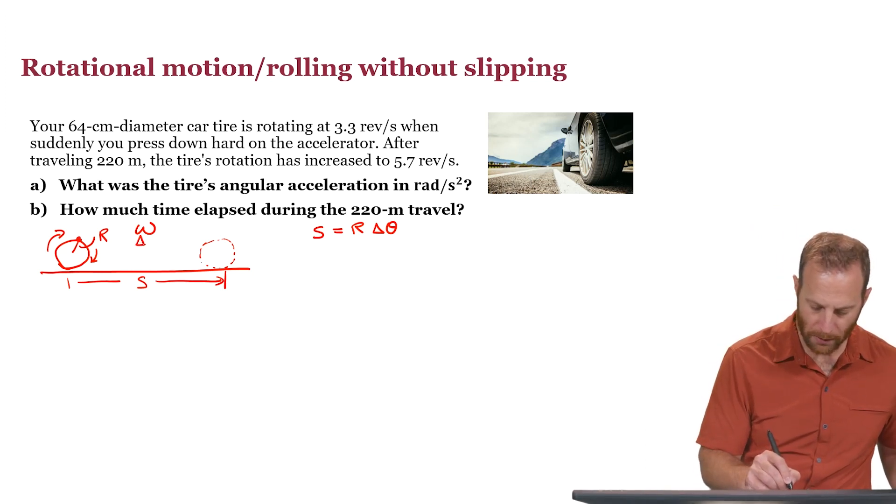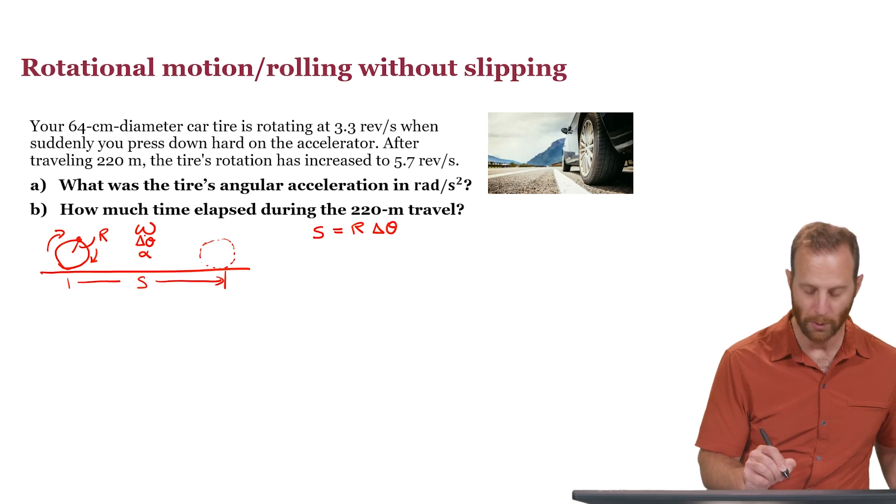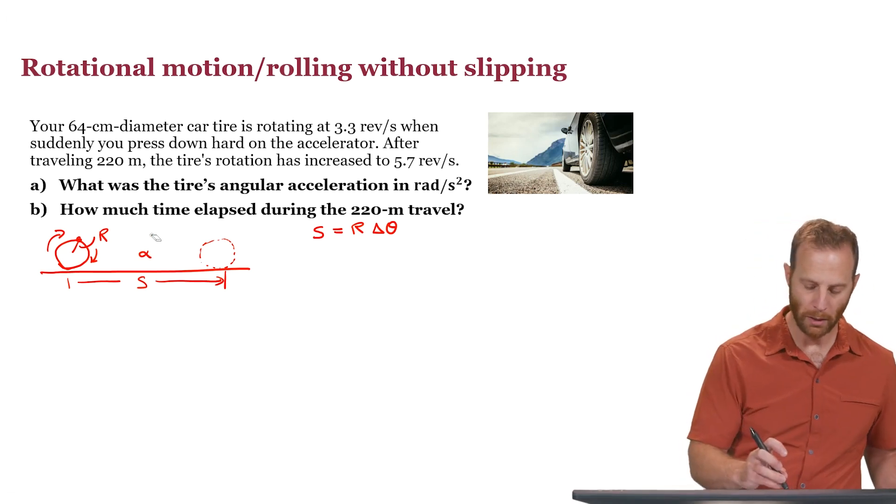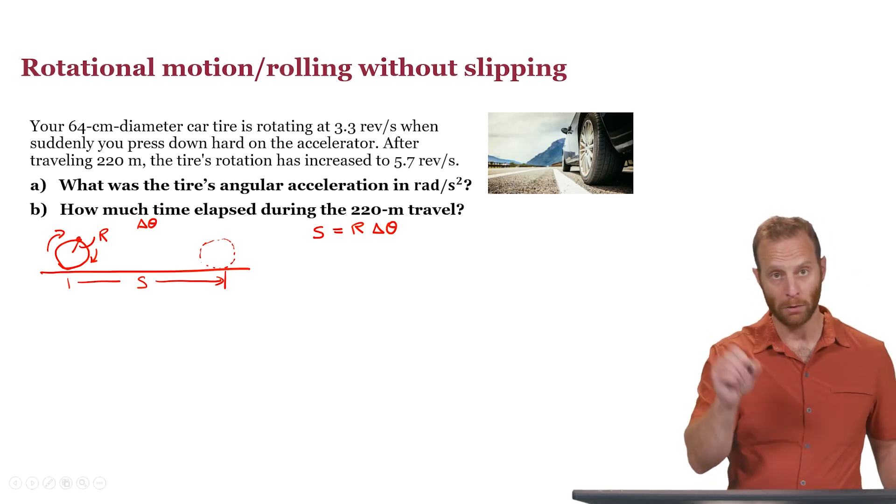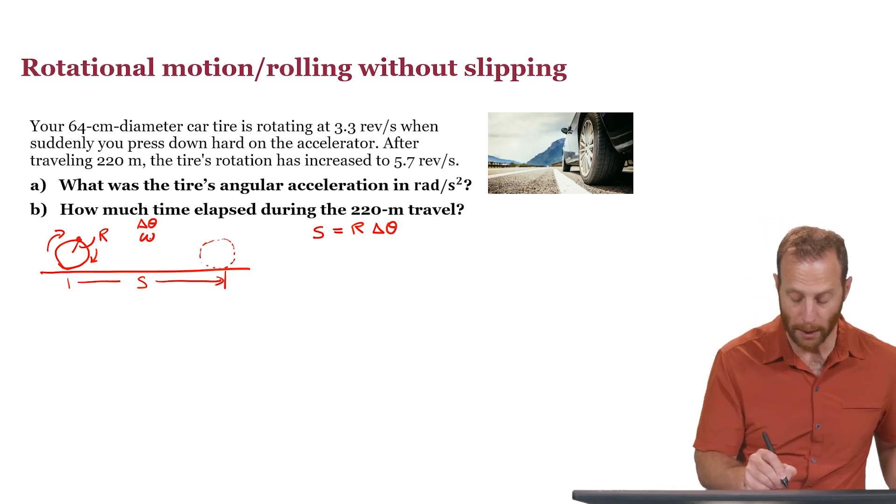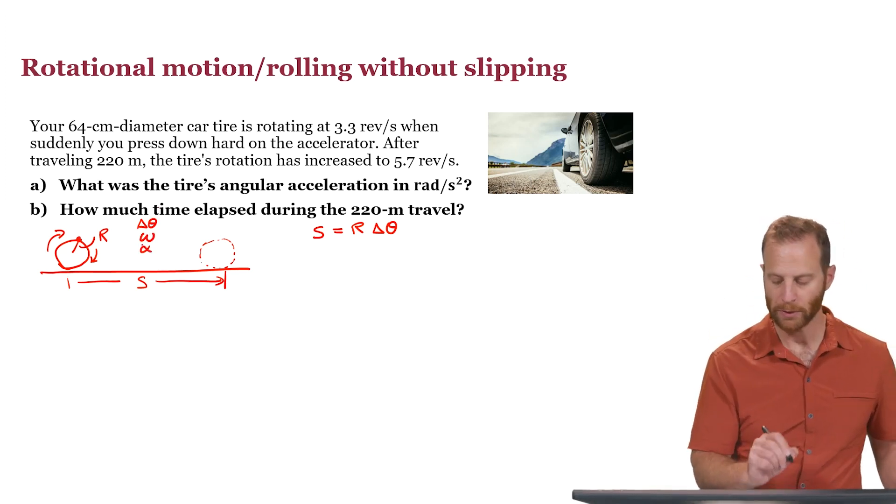So we have omega, we have delta theta, and we have angular acceleration. All three of these angular quantities to think about: the change in angle, how far it's rotated, the angular velocity, and the angular acceleration.